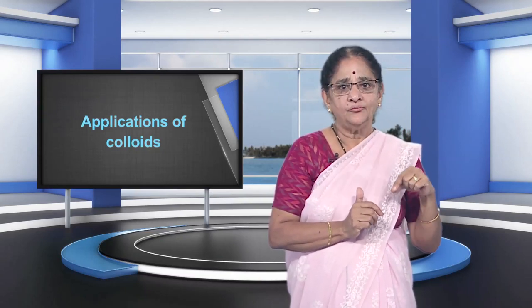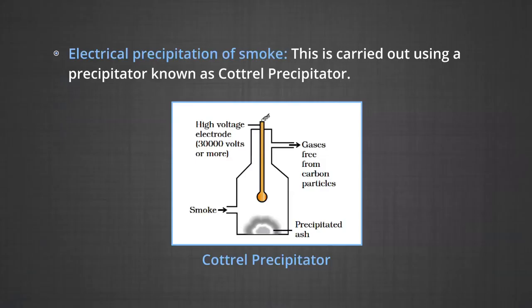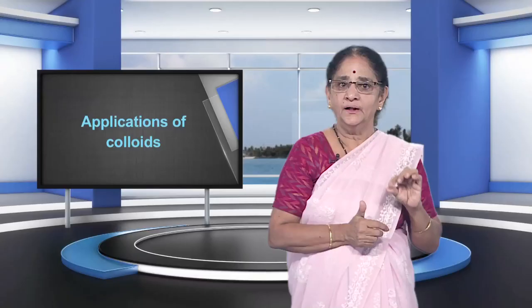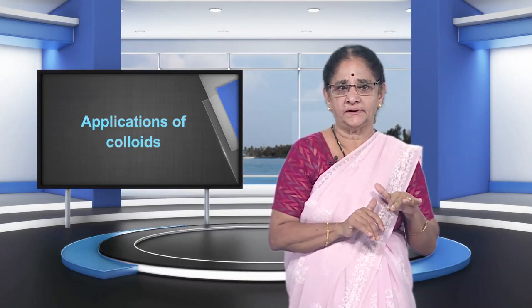Let us study the applications of colloids. Colloids are widely used in industry. Number one, electrical precipitation of smoke: this is carried out using a precipitator known as the Cottrell precipitator. Smoke is a colloidal solution of solid particles such as carbon, arsenic compounds, dust, etc. present in air. The smoke, before it comes out from the chimney, is led through a chamber containing plates having a charge opposite to that carried by smoke particles. The particles coming in contact with these plates lose their charge and get precipitated, settling down on the floor of the chamber.